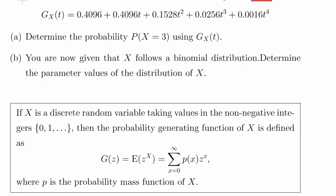Now actually I think there is a typo there. I think that should be 3t². Sorry, there are always typos. So determine the probability of X equal to 3 using gX of t. Also, you are now given that X follows a binomial distribution. Determine the parameter values of the distribution of X, n and p.